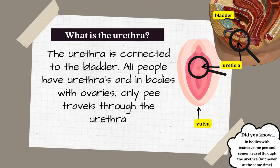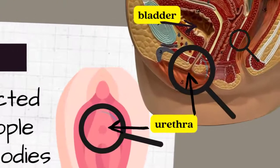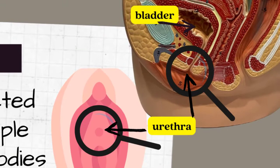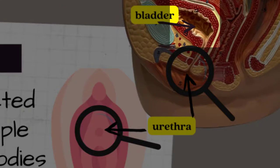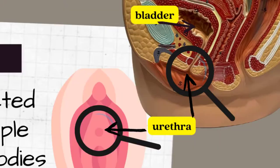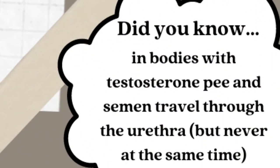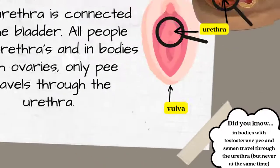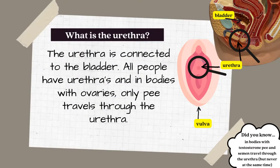The urethra is connected to the bladder. All people have urethras, and in bodies with ovaries, only pee travels through the urethra. The urethra is the whole tube that leads from the bladder to the external opening where you'd pee from. Did you know in bodies with testosterone, both pee and semen travel through the urethra, but never at the same time?